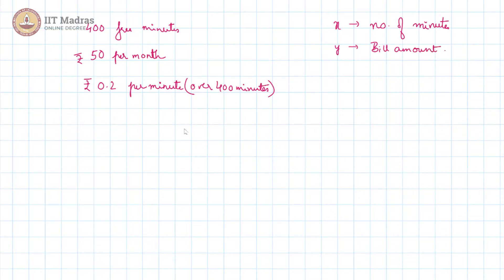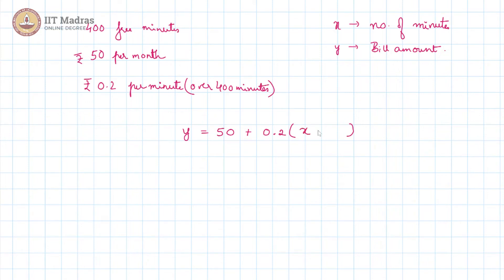What we know is that for every month, the bill amount will always have a 50 rupee fixed charge, and on top of that, you are being charged 0.2 rupees for every minute over 400. This means if x is the total number of minutes, then (x minus 400) multiplied by 0.2 will be the charge for the additional minutes.